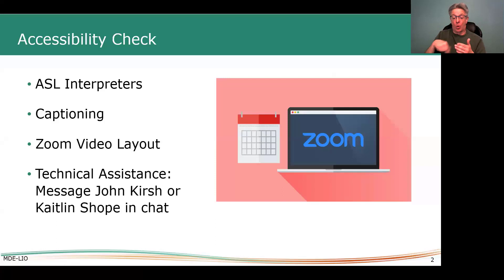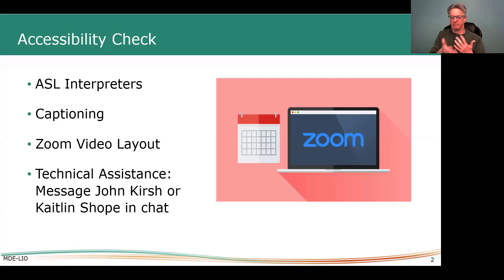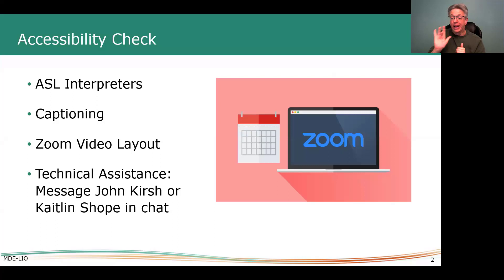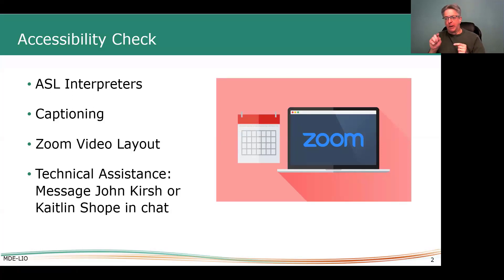First we'd like to discuss the accessibility check. Before we proceed with today's event, we want to make sure that everybody's accessibility needs are met — that is a priority today. Captioning is available for this webinar. To turn on the captioning, click 'Show Captions' at the bottom of your Zoom screen. You might need to click 'More' if you don't see it right away.